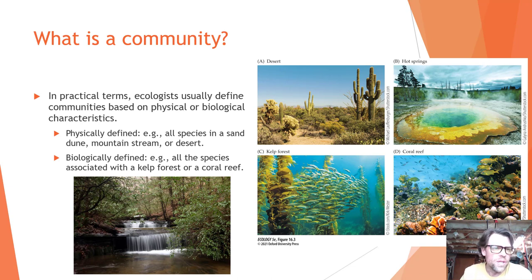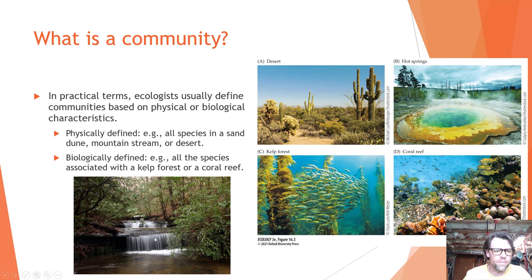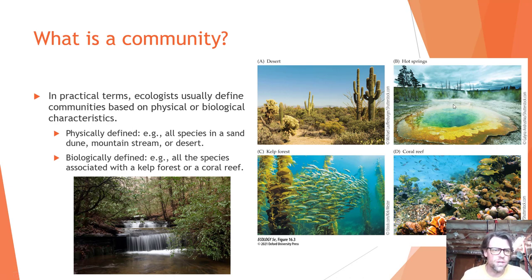What is a community? Ecologists usually define communities based on their physical or biological characteristics. A physically defined community includes all species in a sand dune, mountain stream, or desert. A biologically defined community includes all the species associated with a kelp forest or coral reef. Ecologists use these terms somewhat interchangeably and we need to be sure we define them when talking about them.